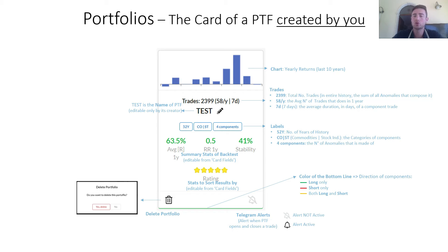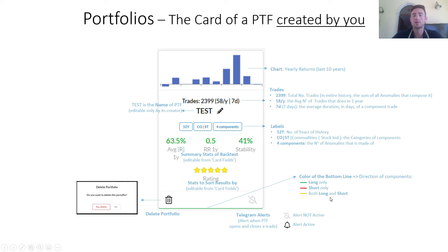The color of the bottom line gives us information about whether the portfolio is composed just by long anomalies — green line; if red, short-only anomalies; if gold, both long and short anomalies.